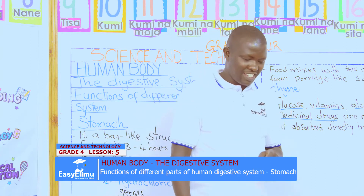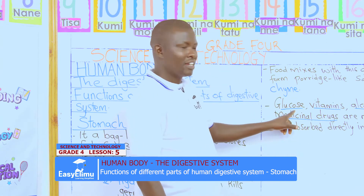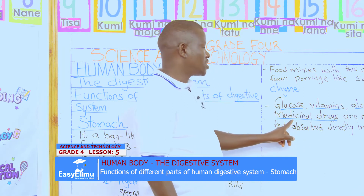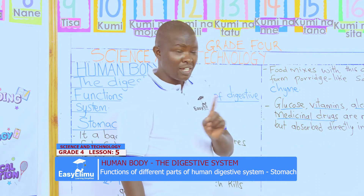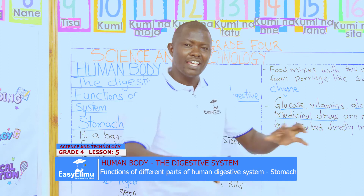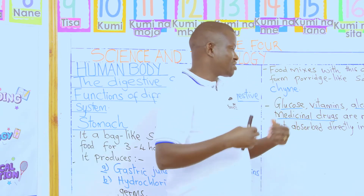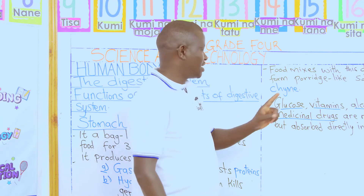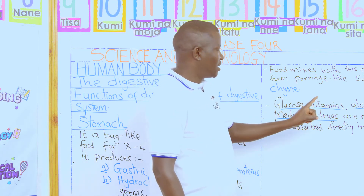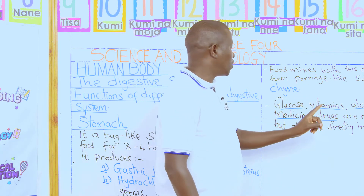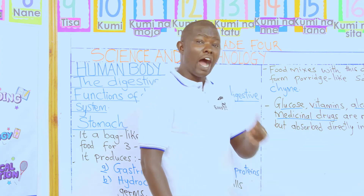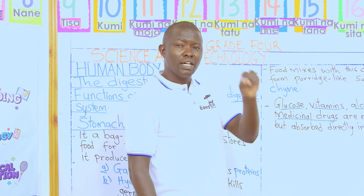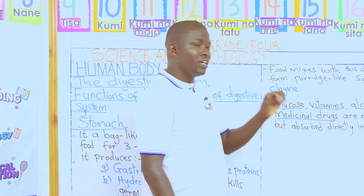But take note of this: glucose, vitamins, alcohol, and medicinal drugs are not digested. Instead, they are absorbed directly to our bodies through the stomach. I will repeat — glucose, vitamins, alcohol, and medicinal drugs are never digested, but they are absorbed directly in the stomach.